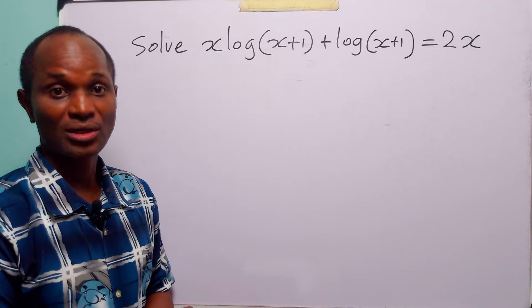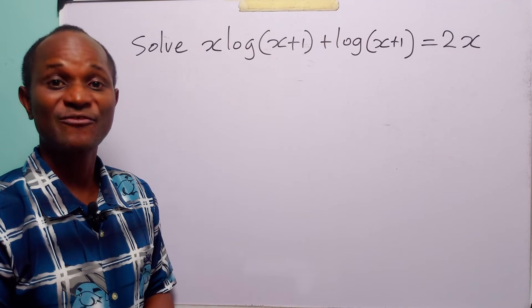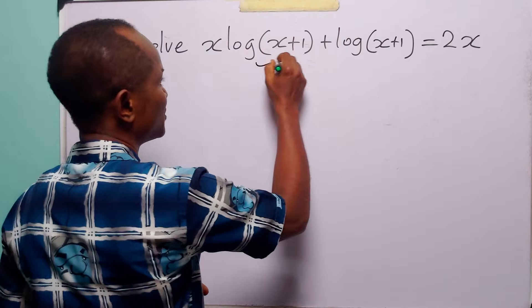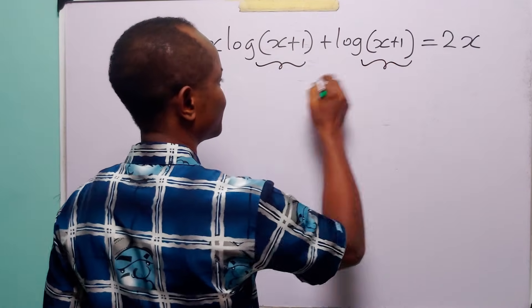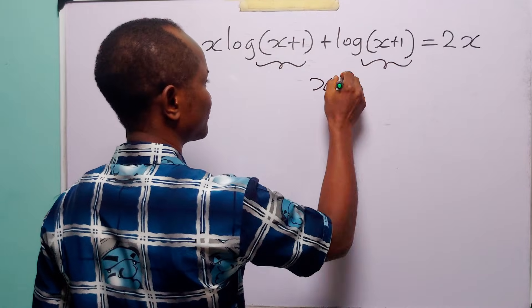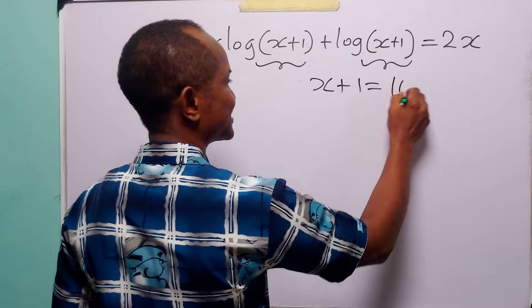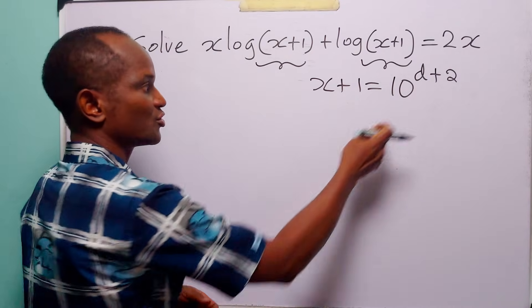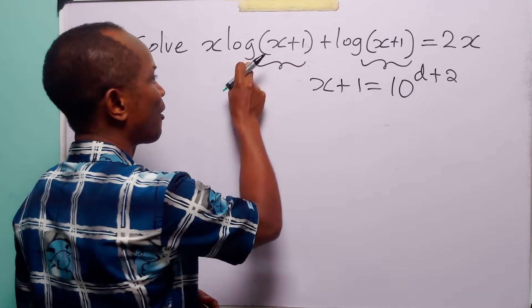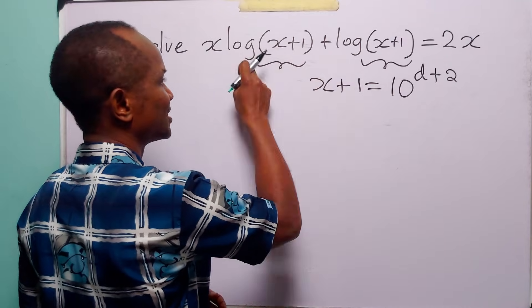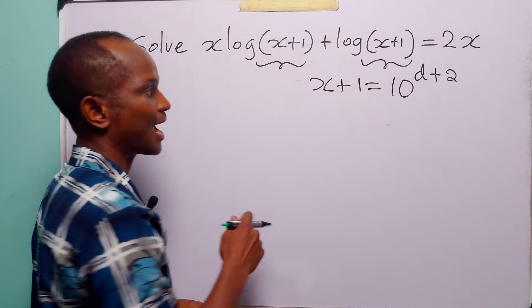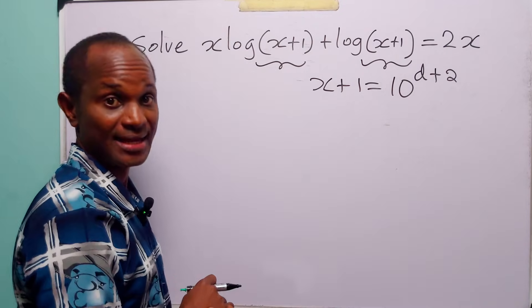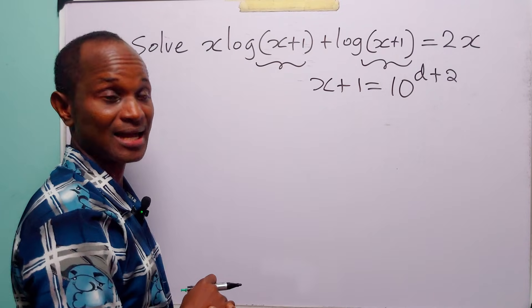To solve this logarithmic equation, we will start with a very simple substitution. What we are going to do is replace x plus 1 with 10 to the power d plus 2. 10 is the common base of these two logarithms, and 2 is from the coefficient of x on the right-hand side.